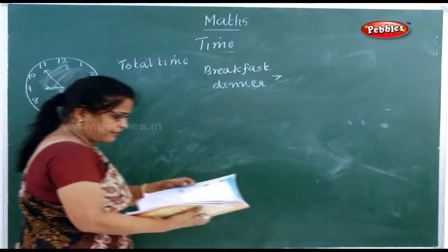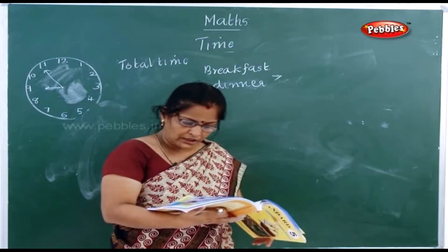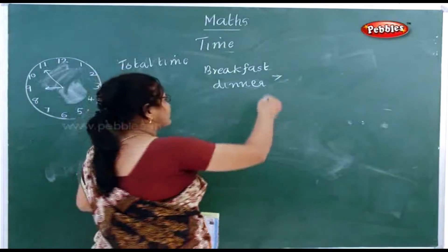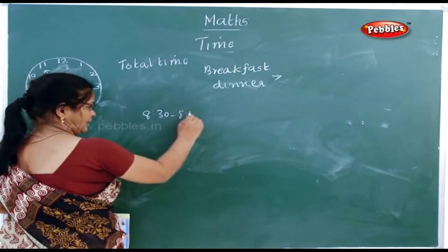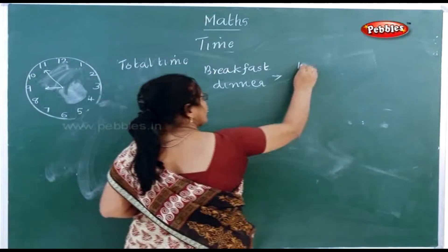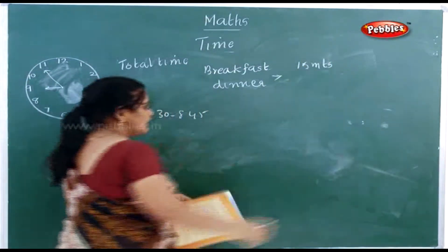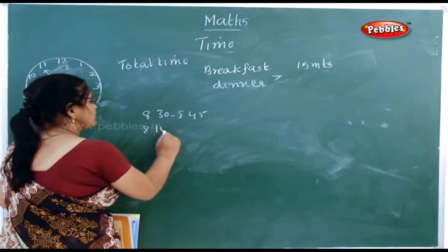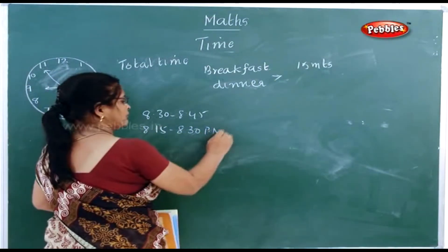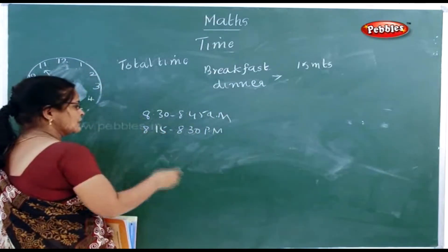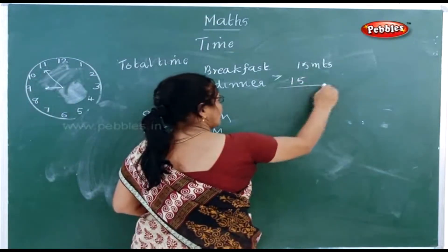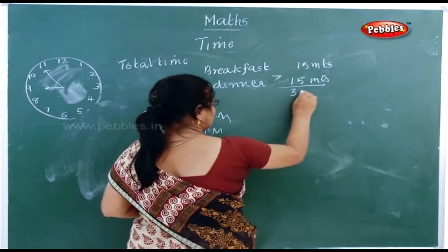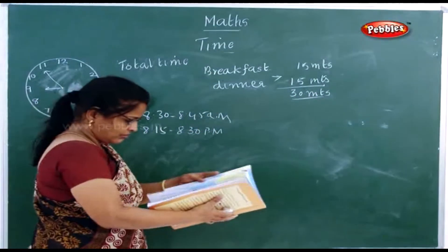What is the time for breakfast? He had breakfast from 8:30 AM to 8:45 AM, so he took 15 minutes. Now dinner: from 8:15 PM to 8:30 PM — again 15 minutes. So the total time taken for both breakfast and dinner is 30 minutes.